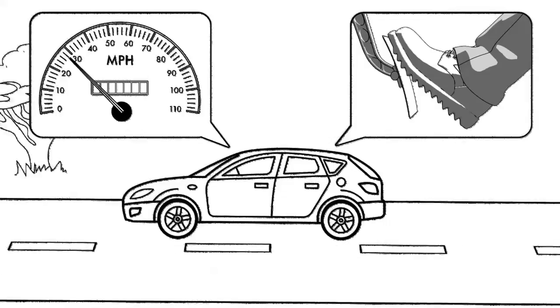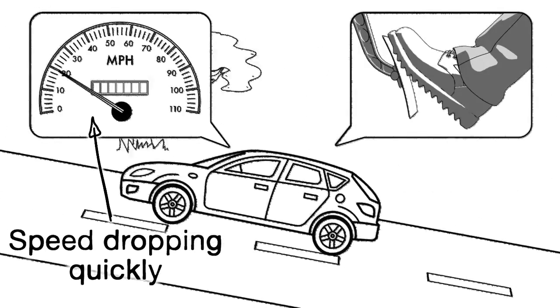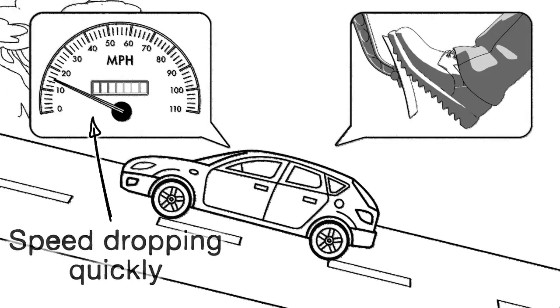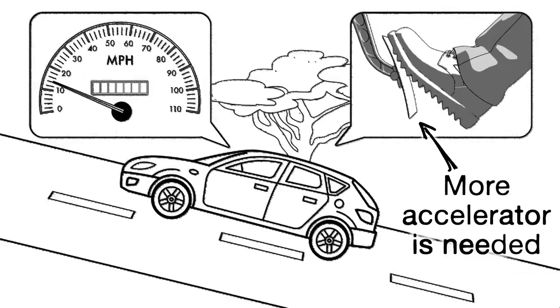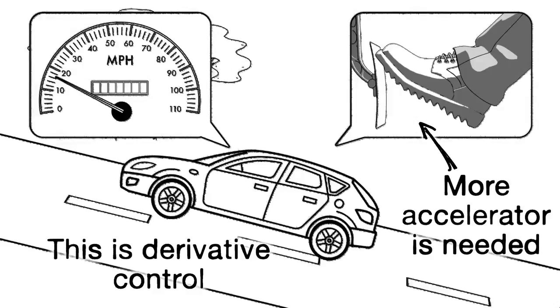What if the car suddenly starts climbing a steep hill? The speed rapidly drops off so we need to apply a lot of accelerator quickly to counteract this sudden drop in speed. The faster the speed is dropping the more acceleration we apply. This is derivative control.